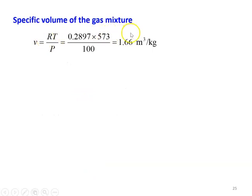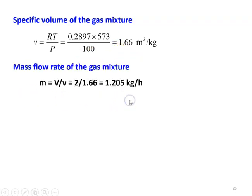Then the specific volume of the gaseous mixture: small v equals RT divided by P. So R is 0.2897, temperature is 573 K, pressure is 100 kPa — giving 1.66 cubic meters per kilogram. Then the mass flow rate equals total volume flow rate divided by specific volume: 2 divided by 1.66 equals 1.205 kilogram per hour. This is the mass flow rate — the answer to the question.